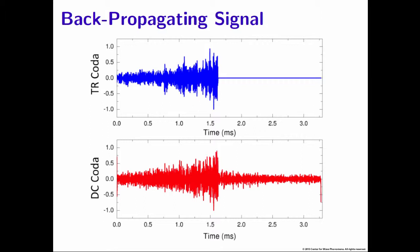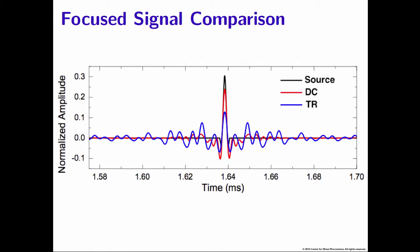Once we've calculated these backpropagating signals, we emit them back into our medium and look at how the temporal focus compares between both methods. In this figure, black represents our original source impulse — what we would hope to reconstruct. Red is the temporal focus achieved using deconvolution, and blue is the temporal focus achieved using time reversal. You'll note that time reversal's temporal focus has significant side lobes, whereas deconvolution does not, so deconvolution is able to reconstruct that original source impulse a lot better.